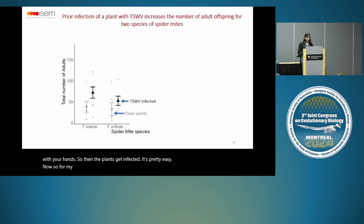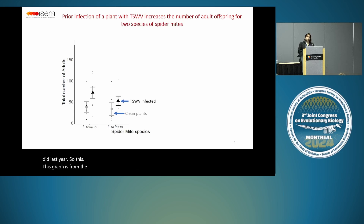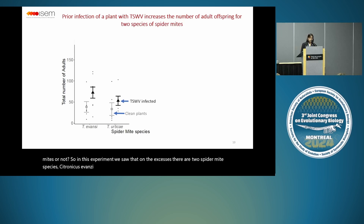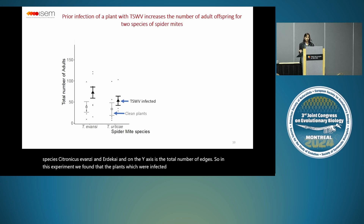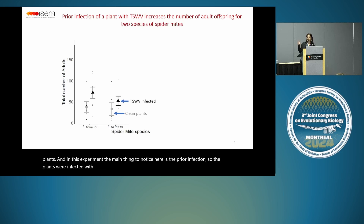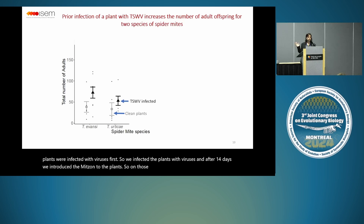For my main experiment today, I'm going to show you previous results from last year. This graph is from an experiment where we wanted to test how tomato spotted wilt virus increases the reproductive performance of spider mites — does it facilitate spider mites? On the x-axis are two spider mite species, Tetranychus evansi and urticae. On the y-axis is the total number of adults. We found that plants already infected by tomato spotted wilt virus — shown in black — gave rise to more adults. The key thing to note is the prior infection: plants were infected with virus first, then mites were introduced 14 days later.